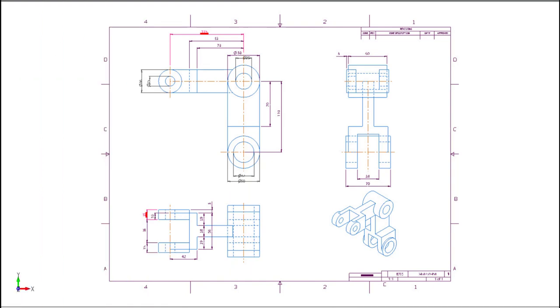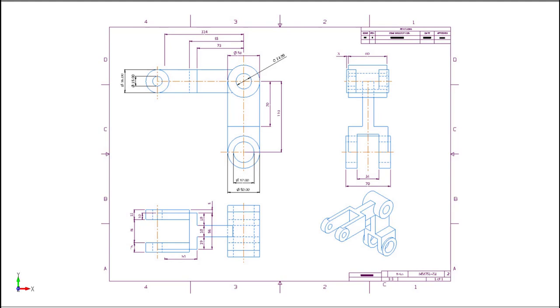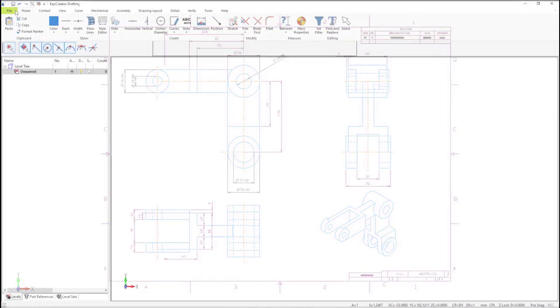This is a two-part video. In the first part of the video, we're going to be editing an imported drawing. In the second part of the video, we're going to be adding red line information to an imported drawing.